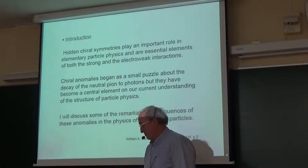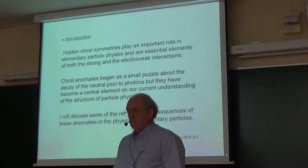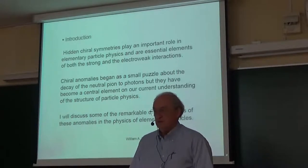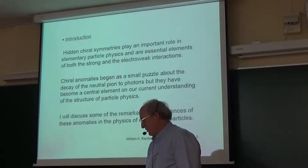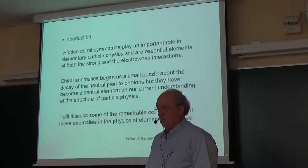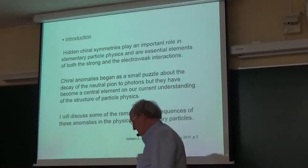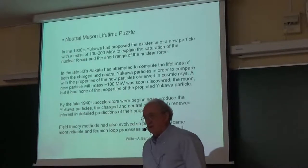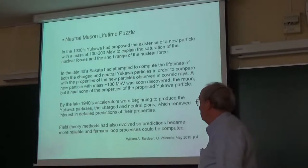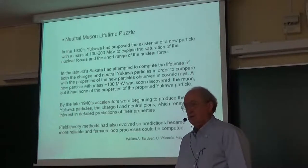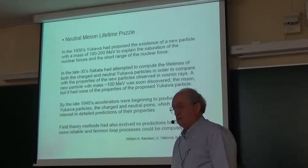Chiral symmetries also play an important role as essential elements of the standard model. Chiral anomalies, which I'll start talking about and generalize to full gauge anomalies, began as a small puzzle about the decay of the neutral pion to photons. This has become a much bigger subject with many more consequences. My story starts in the 1930s when Yukawa proposed the existence of a new particle with a mass between 100 and 200 MeV, based on the saturation of nuclear forces and the short-range nature of that force.